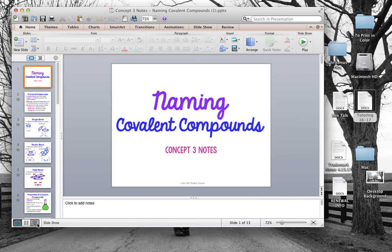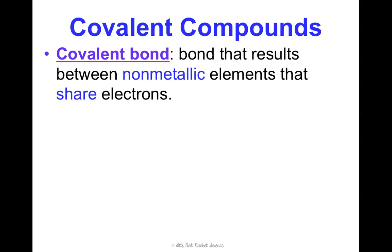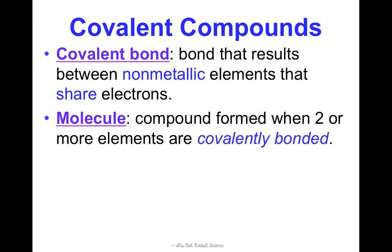We have three notes in our last of our bonding unit, and we're going to finally talk more about covalent compounds and covalent bonds, which we've mentioned but haven't really spent time on. Covalent compounds form because of covalent bonds forming. A covalent bond is a bond that results between non-metallic elements — two non-metals — that are going to share electrons, and what results is a molecule. A molecule is only supposed to be used when referring to two or more elements that are covalently bonded.